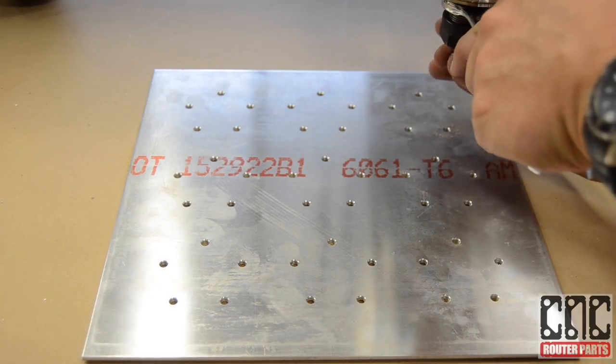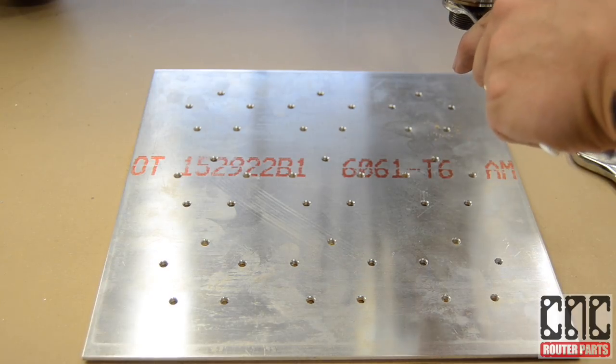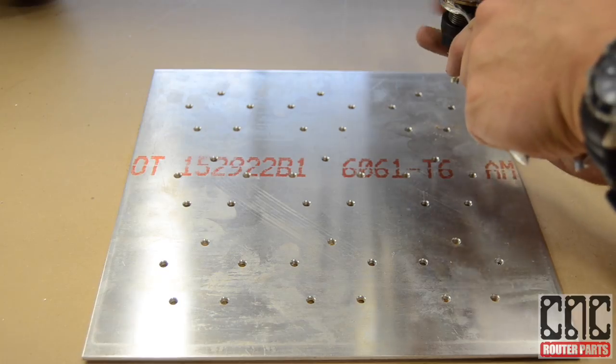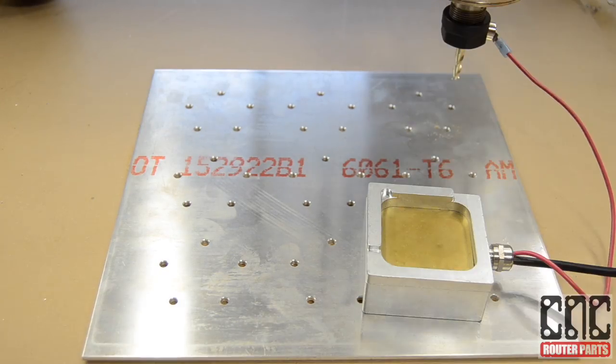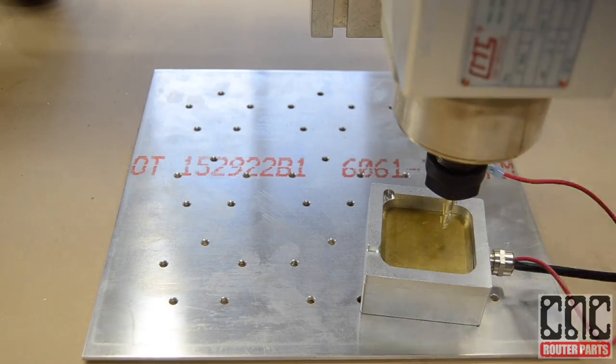Next I'll change over to a quarter inch flat end mill and machine the pockets and contours to finish the parts and recalibrate the Z axis once again using our touch plate.